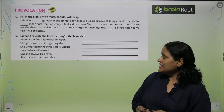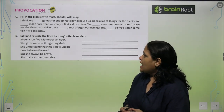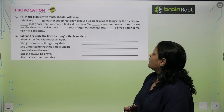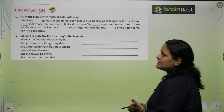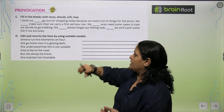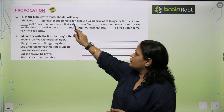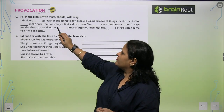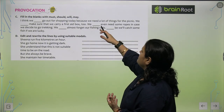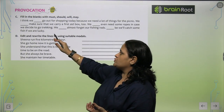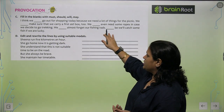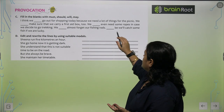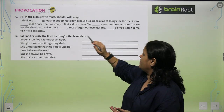Exercise C: Fill in the blanks with must, should, will, or may. 'I think we may go out for shopping today because we need a lot of things for the picnic.' 'We dash make sure that we carry a first aid box.' 'We may even need some ropes in case we decide to go trekking.' 'We may almost forget our fishing rods.' 'We will catch some fish if we are lucky.'